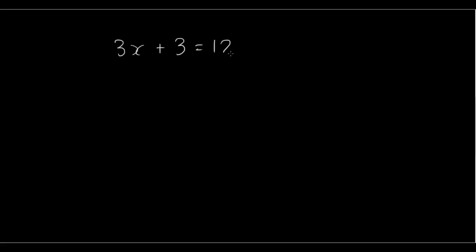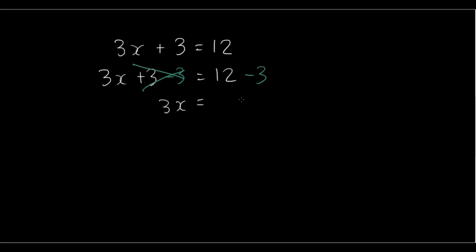Let's do another one: 3x plus 3 equals 12. We're going to start off by taking away 3 on both sides. Plus 3 and minus 3 cancel each other out, so you're left with 3x on the left, and on the right 12 minus 3 is 9. So 3x equals 9. Let's divide both sides by 3: 3 divided by 3 is 1, so 1x equals 9 divided by 3, which is 3. So x equals 3.